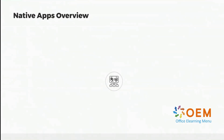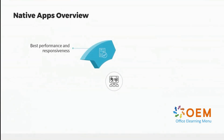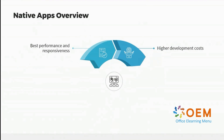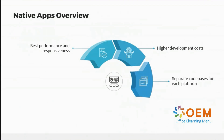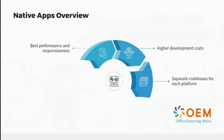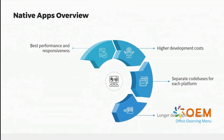Now let's dive a little bit deeper into the power of native applications. Native apps offer the best performance and responsiveness because they are built for a specific platform. They are also high in terms of cost because they require a lot of expertise and knowledge. They require separate code bases for each platform, meaning we have to use a specific programming language for Android and a specific one for iOS. They also require a longer development time.